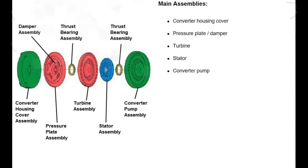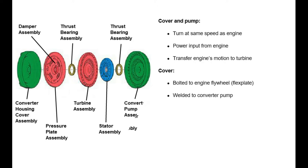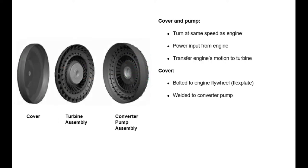A torque converter is made up of five main assemblies. These assemblies include the converter housing cover, pressure plate damper, turbine, stator, and the converter pump. The cover and pump turn at the same speed as the engine and act as a power input from the engine.